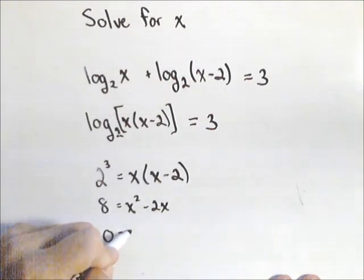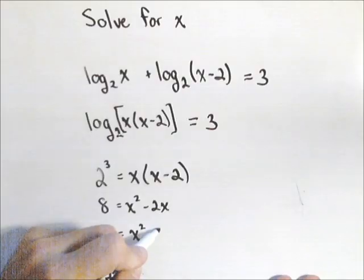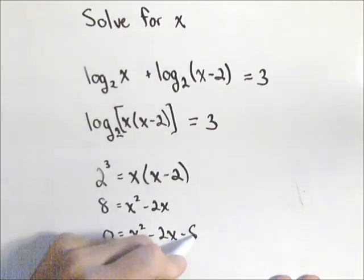So we have zero equals, subtract eight from both sides, x squared minus two x minus eight.